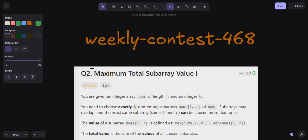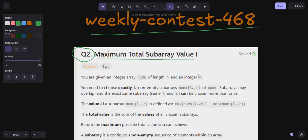Hello everyone, welcome back to my YouTube channel. I'm going to solve question number two of weekly contest 468: Maximum Total Subarray Value I. Let's read the problem statement. In this problem, you are given an integer array nums of length n and integer k.